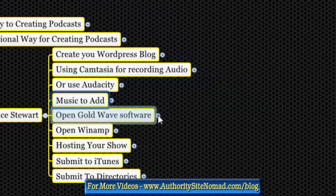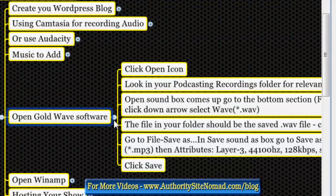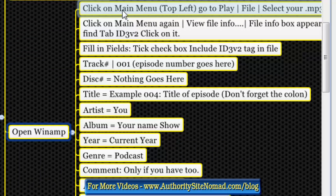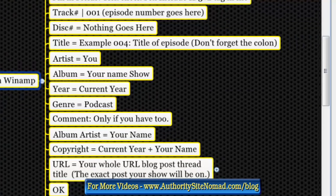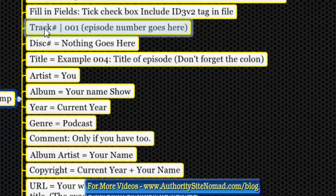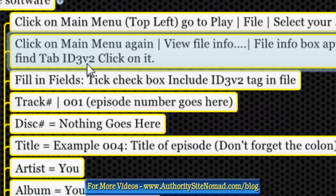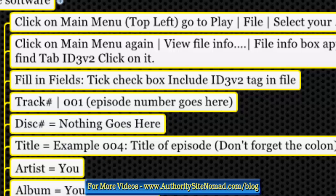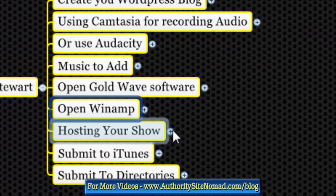Open your GoldWave software to organize your MP3, then open Winamp. In Winamp you need to create an ID3V2 tag. This tag gives iTunes the information it needs when you submit your podcast feed - title, artist, episode details and so on. So Winamp handles your ID3 tagging before you host your show.